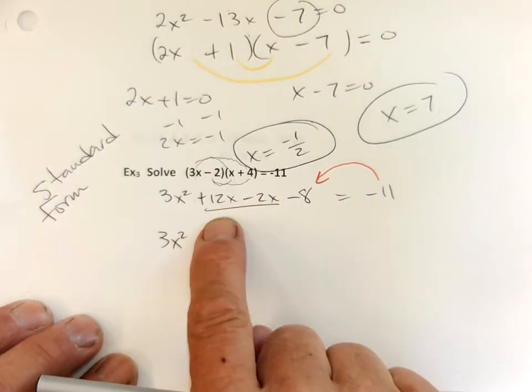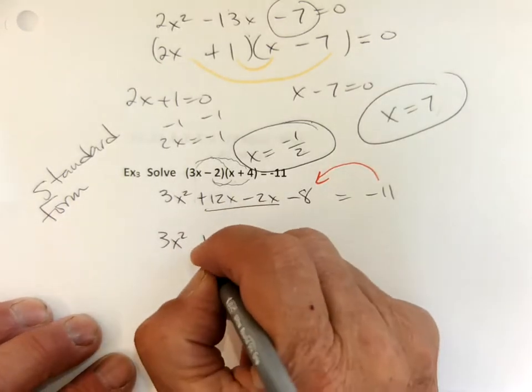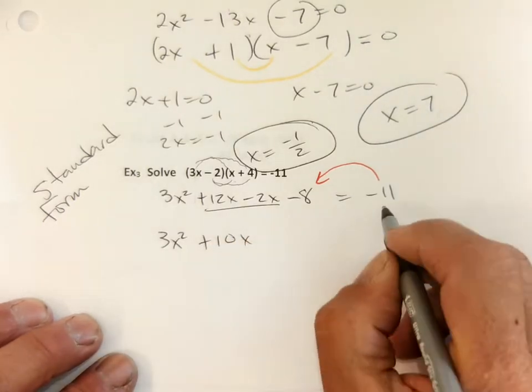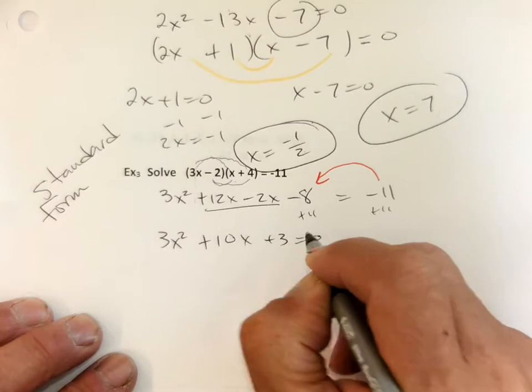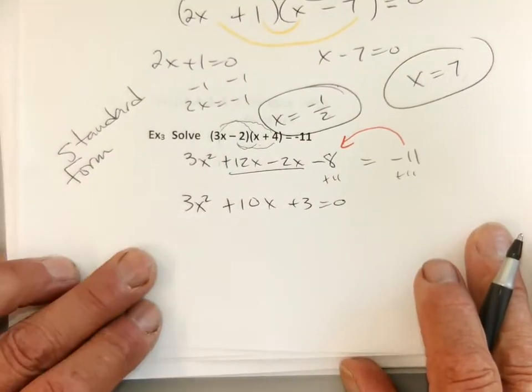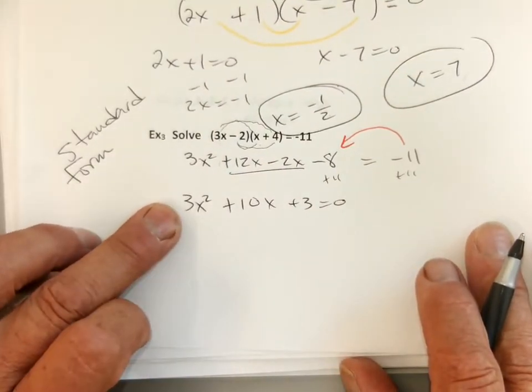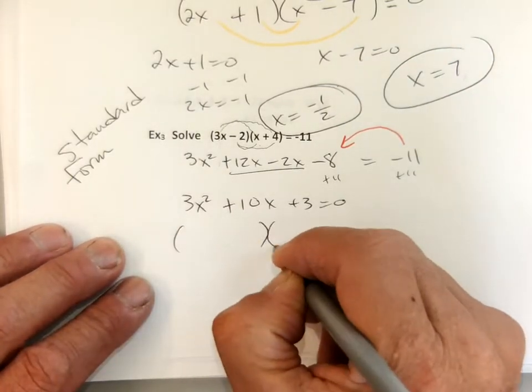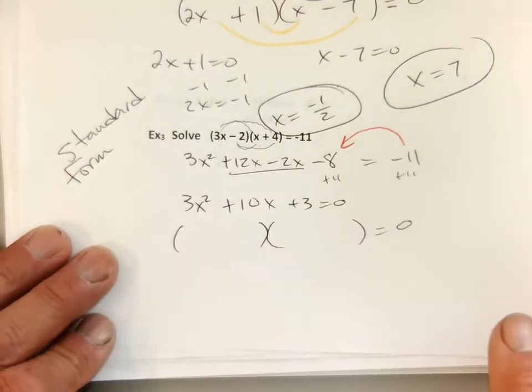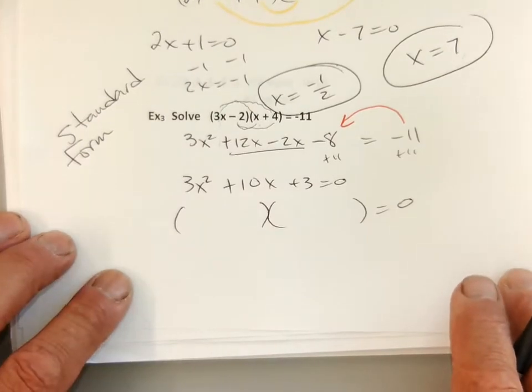10x, everybody sees the 10x, right? Plus 10x. And if I add 11, I'll get plus 3. Hey, that looks familiar. Who factored that one? We've done this one. I did that on purpose, you think? Maybe.